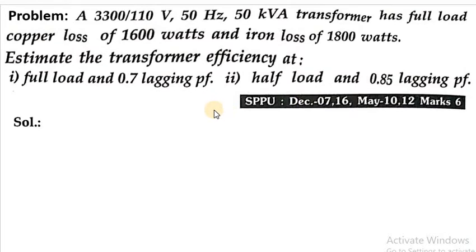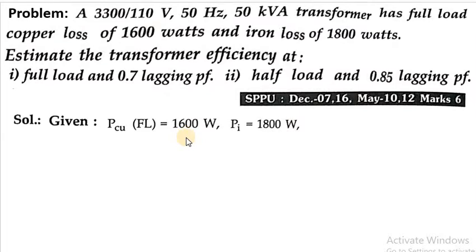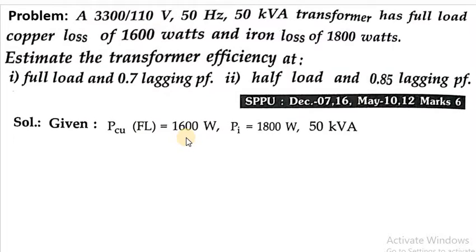The given data of this numerical is: copper losses at full load (P_cu(FL)) are 1600 watts, iron losses (P_i) are 1800 watts, and the kVA rating of the transformer is 50 kVA.